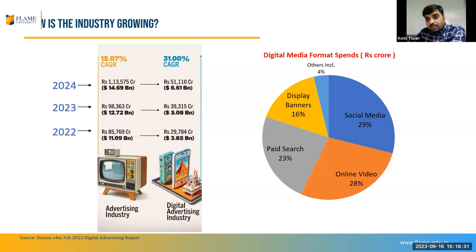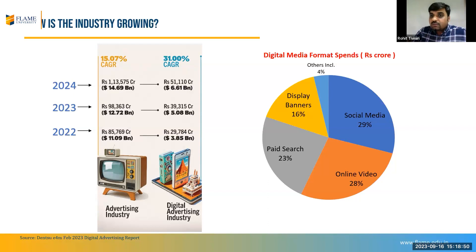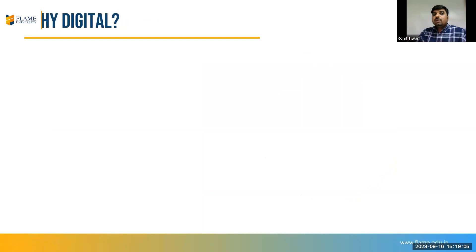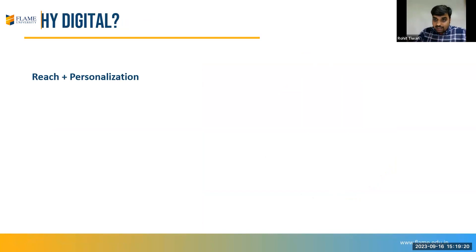Looking at the split of digital spends, social media has the highest — almost 29% of spends are happening on social media, followed by paid search at 23%. Now coming to the question of why digital: first is reach and personalization. Almost 600 million people are internet users and almost half are on social media platforms. You can talk to a student differently than someone who is working — that's the beauty of personalization.